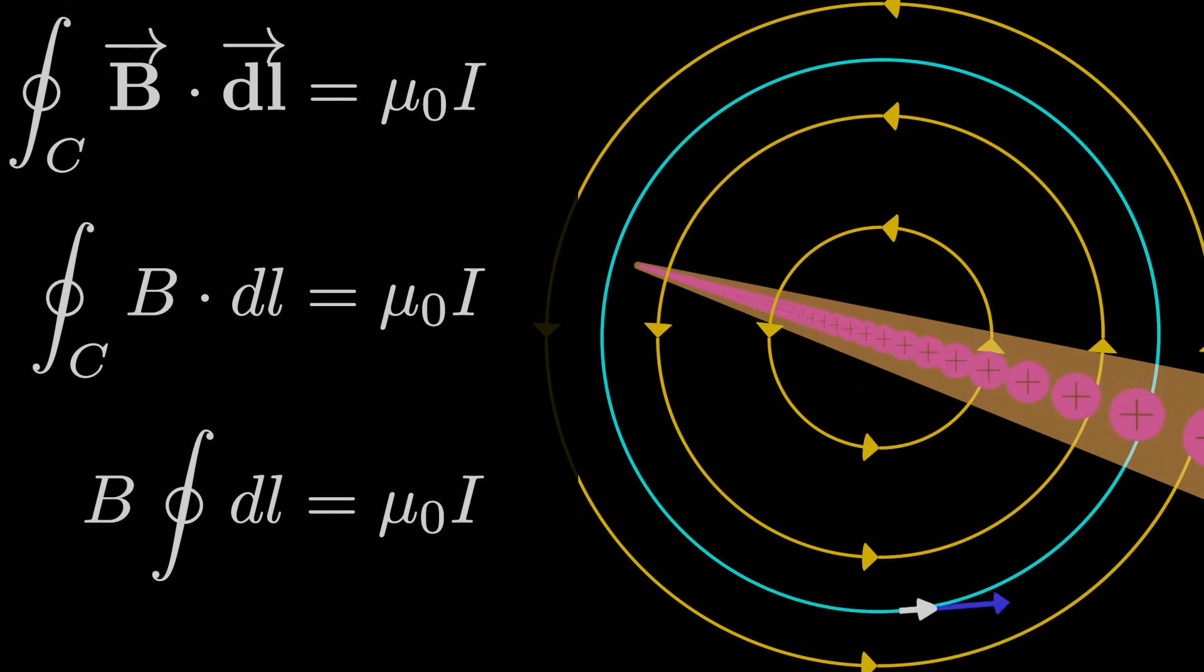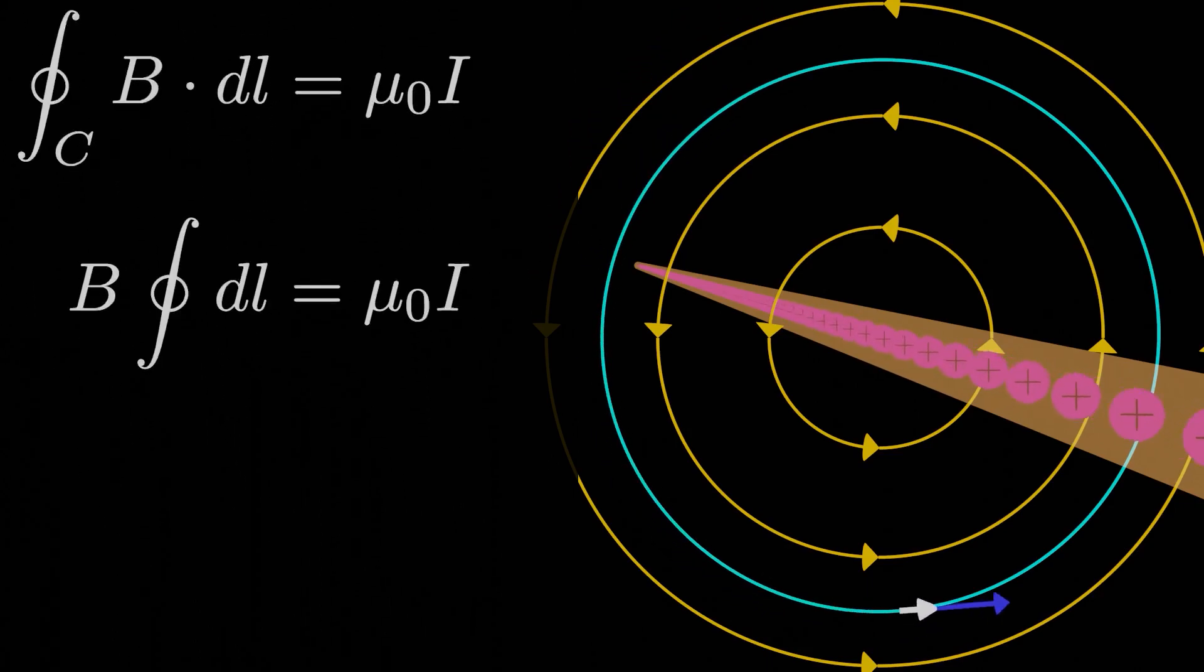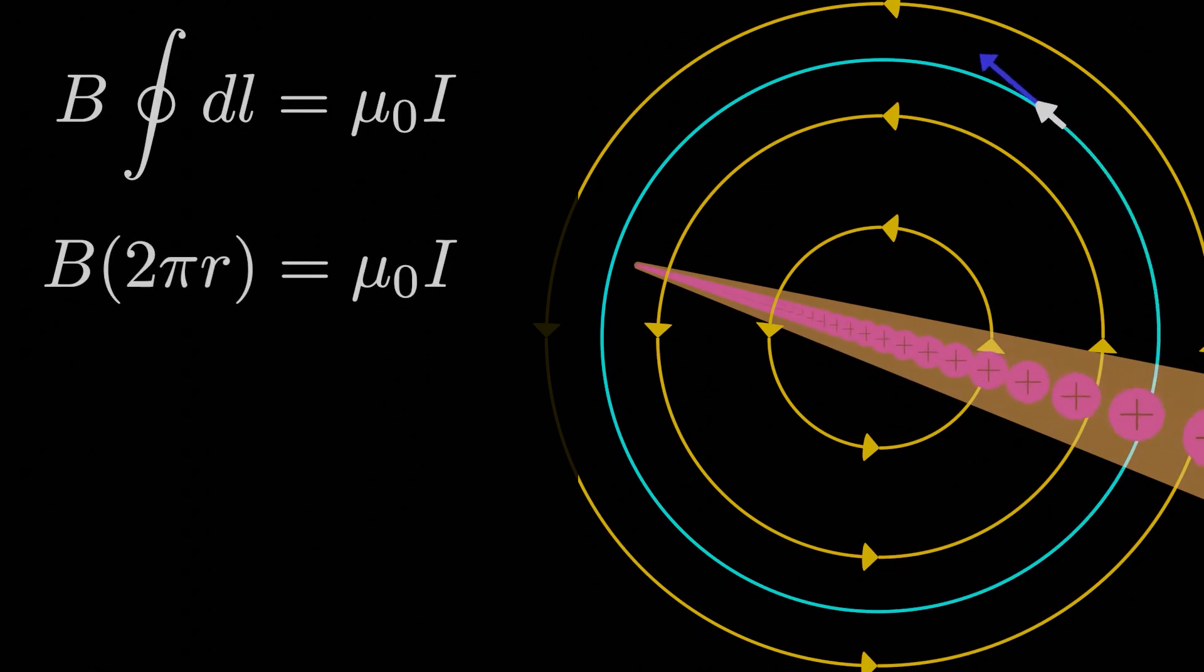Now what is the closed loop integral of DL? It's just the integration, or the sum of all the infinitesimal length elements that make up the loop. That sum is just the circumference of the loop, or 2 pi r, where r is the radius of the loop. If we divide both sides by 2 pi r, we have our final answer for B. The magnitude of B at all points around this ampere loop that we define is equal to mu naught I over 2 pi r.